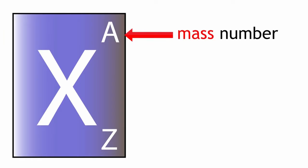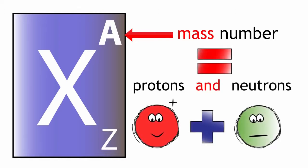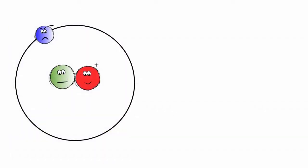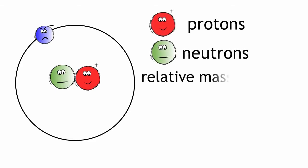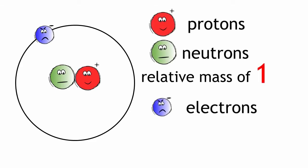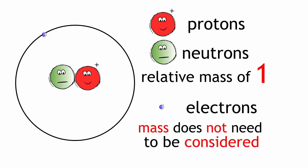The next number we look at is the mass number. The mass number has a symbol A. The mass number tells you how many protons and neutrons are in one atom of an element. We need to remember that protons and neutrons each have a relative mass of one, and that electrons are so small that their mass does not need to be considered in the mass number of an atom.